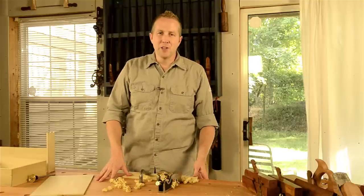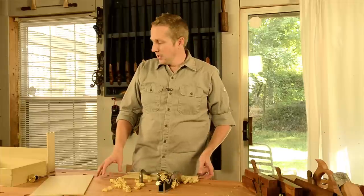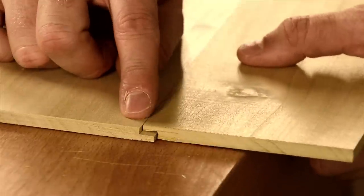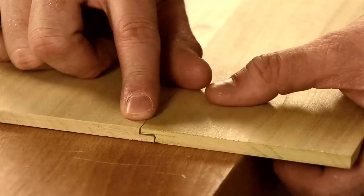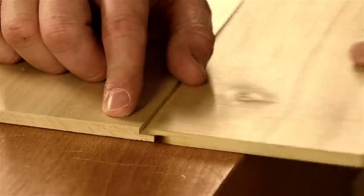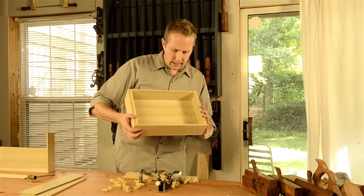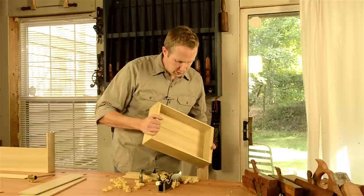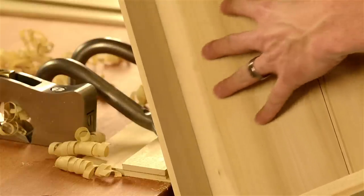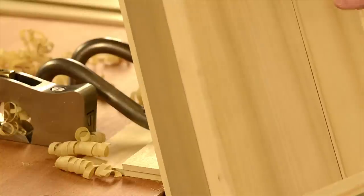Thanks for watching Wood and Shop. I'm Joshua Farnsworth. I want to show you how to make a simple shiplap joint. So what is a shiplap joint? A shiplap joint is essentially two rabbet joints in opposition to each other to create some strength, and it works really well on the bottoms of tool chests, drawers, or anything where you don't want to have the warping action of a large panel and you want to keep it from falling apart.